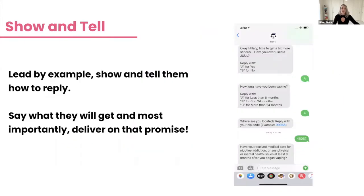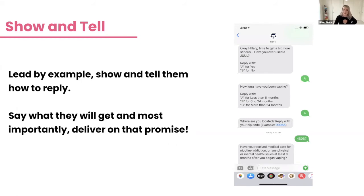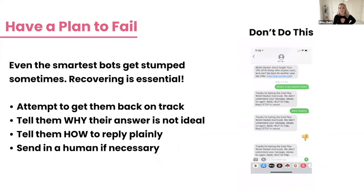Number four: show and tell — lead by example. Tell the user how to reply, especially if you're using an open-ended script or SMS where there are no buttons. Make sure a user knows how to reply and what they're being asked to do. For example, if you're asking for a zip code, show them what a zip code looks like. Also tell them what they're going to get by providing the information, and deliver on that promise.